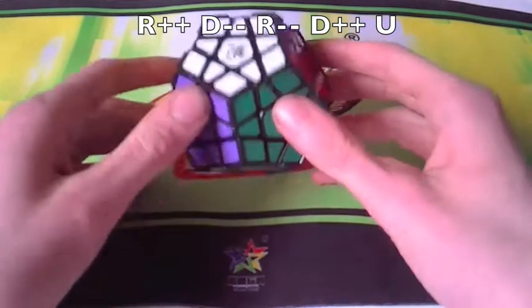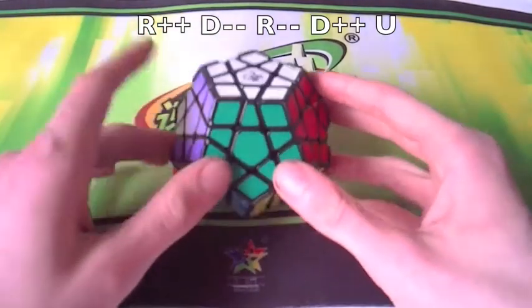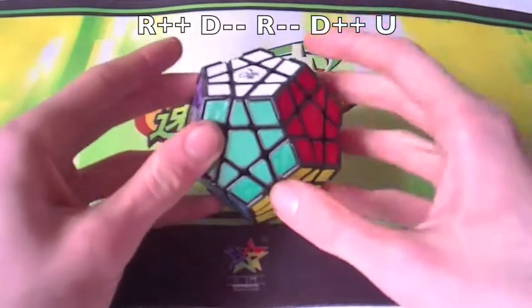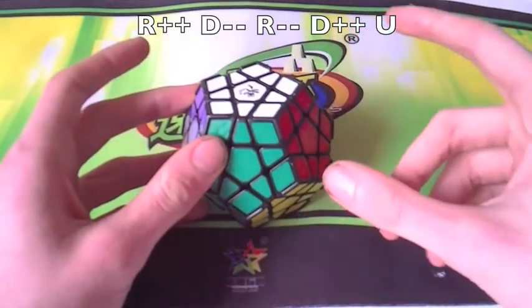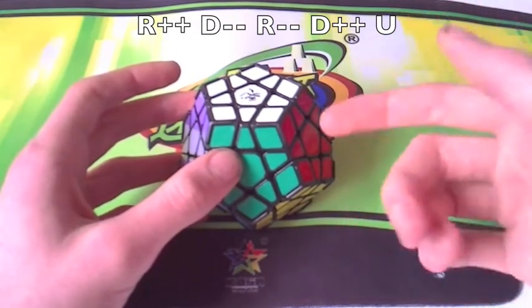It's the R++ and D++ part of it. Now what that is, is you hold the puzzle with white on top and green in front, or as close as you can get to it, and you hold the left, in this case purple, side. And a plus plus indicates clockwise, minus minus is anti-clockwise. That is clockwise twice and anti-clockwise twice.